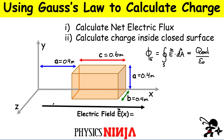The length is given by the letter C and that's going to be 0.6 meters. Now the other thing I need to give you is what is the electric field in space. For this particular problem, I'm going to assume it's only in the x direction. However, I'm going to give it a functional form — we're going to make things a little harder. The electric field is given by 3x plus 2x squared, and it's only in the i-hat direction, which denotes the x direction.